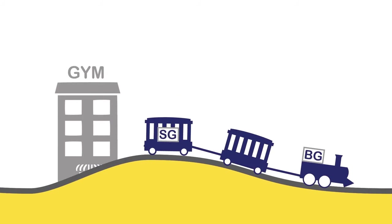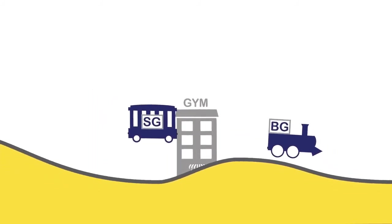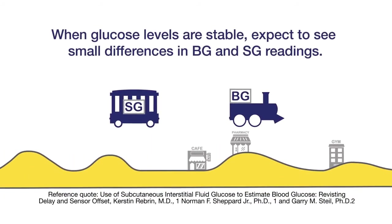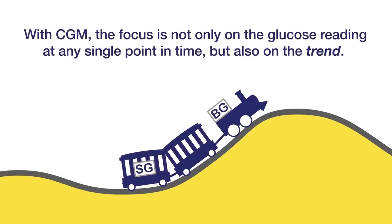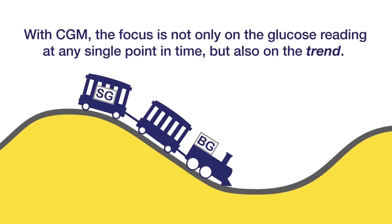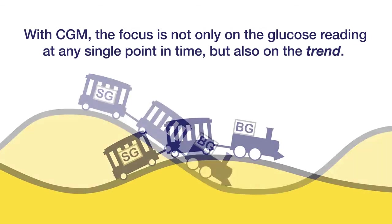There are a couple of important things to keep in mind. When glucose levels are generally stable, expect to see small differences in blood glucose and sensor glucose. However, when the glucose level is changing rapidly, expect to see bigger differences between the blood glucose and sensor glucose readings. It's important to note that with CGM, the focus is not only on the glucose reading at any single point in time, but also on the trend.